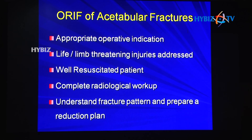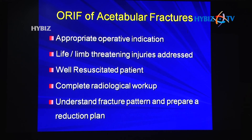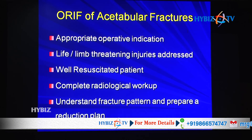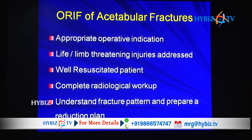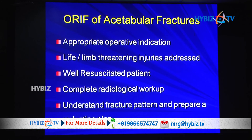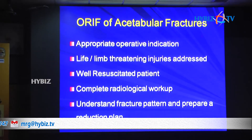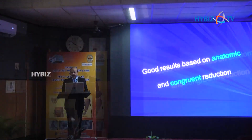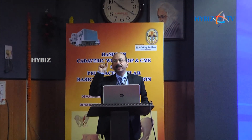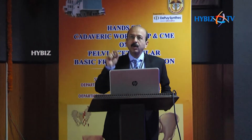The take-home points: use appropriate operative indications — identify what can be treated conservatively versus operatively. Address limb- and life-threatening injuries first. Perform complete radiological workup on a well-resuscitated patient. Understand the fracture pattern and prepare a reduction plan. Good results come only with anatomical and congruent reduction.